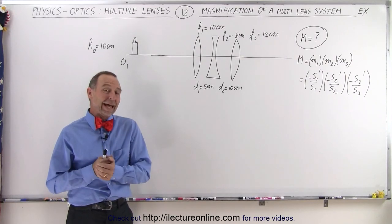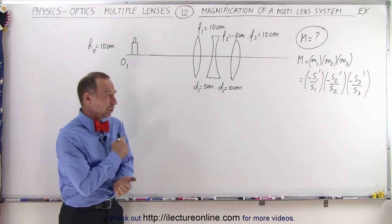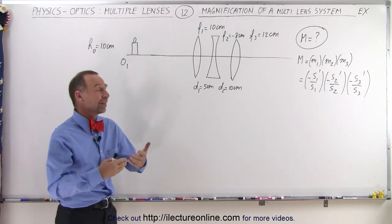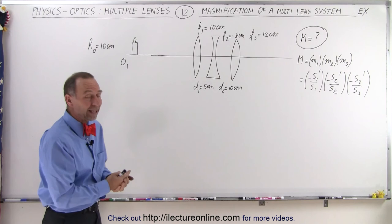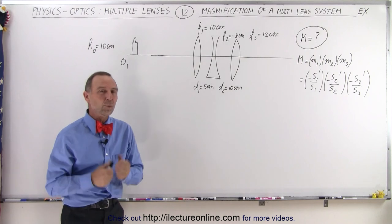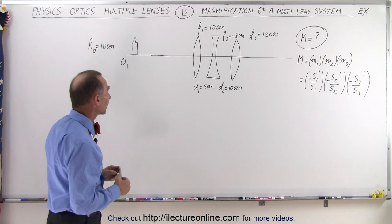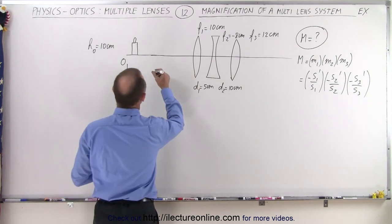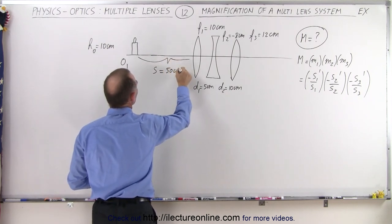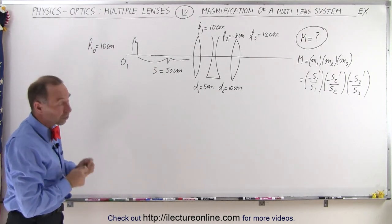Welcome to iLectureOnline. At the recommendation of my better half, who does all the work behind the scenes to put all these videos on YouTube, she told me I should do at least an example of how to do a multi-system calculation for the magnification. So here it is: three lenses, three different focal lengths with some distances between them. What will be the magnification of the final image relative to the original object? Let's say our original object distance s is equal to 50 centimeters, and where will the final image be, and what will be the magnification?